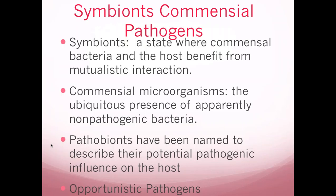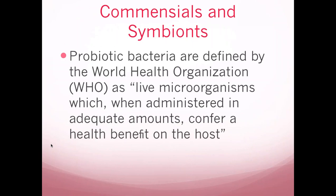Here are some definition slides: symbionts are the ones that really help us out; commensals can help but may be simple to complex helpers; pathobionts are the pathogens that can hang out for a long time until there's an opportunity; and opportunistic pathogens include E. coli infections, staph, and salmonella. This is just language we need to learn.